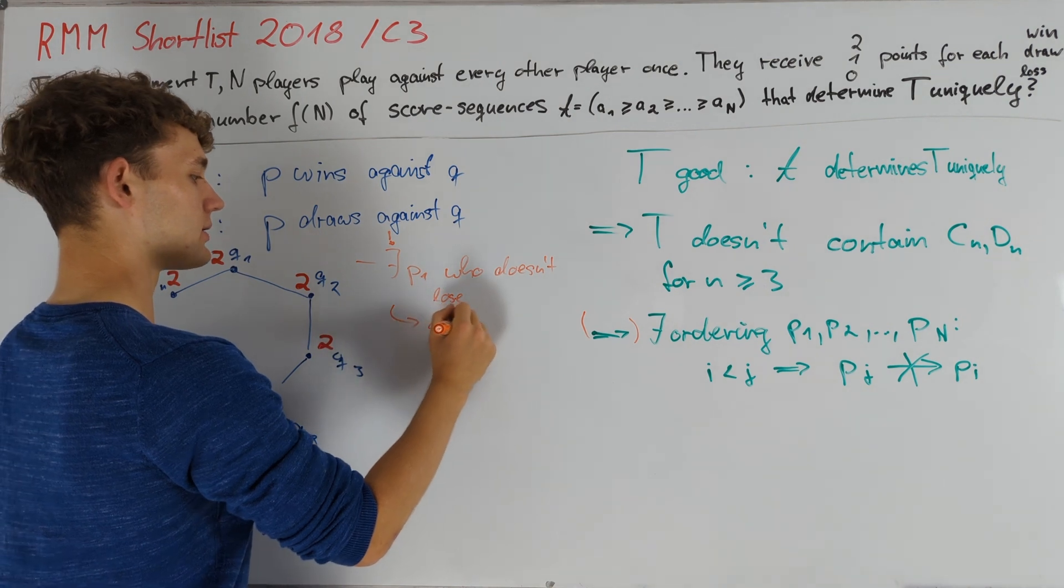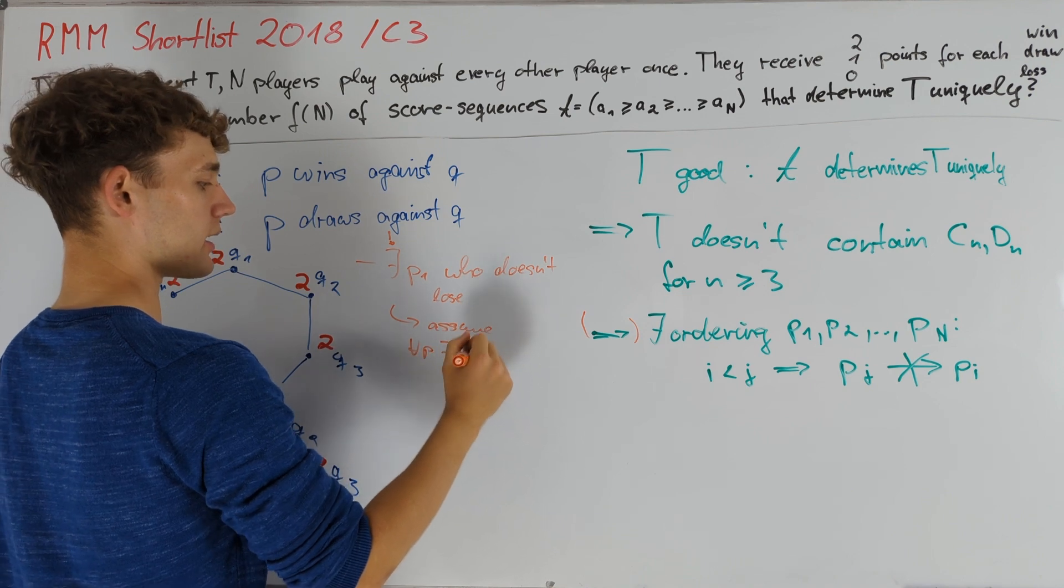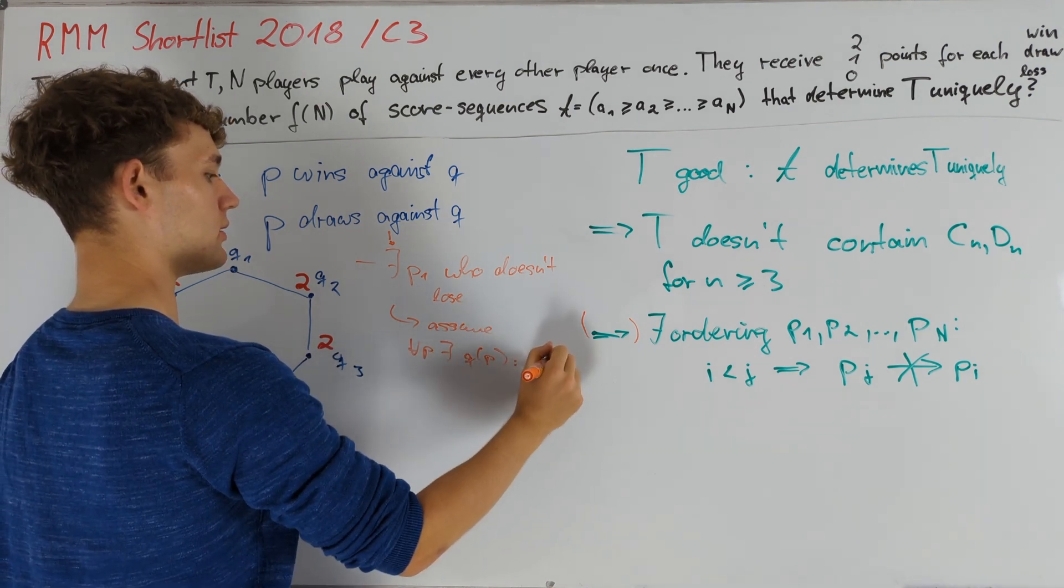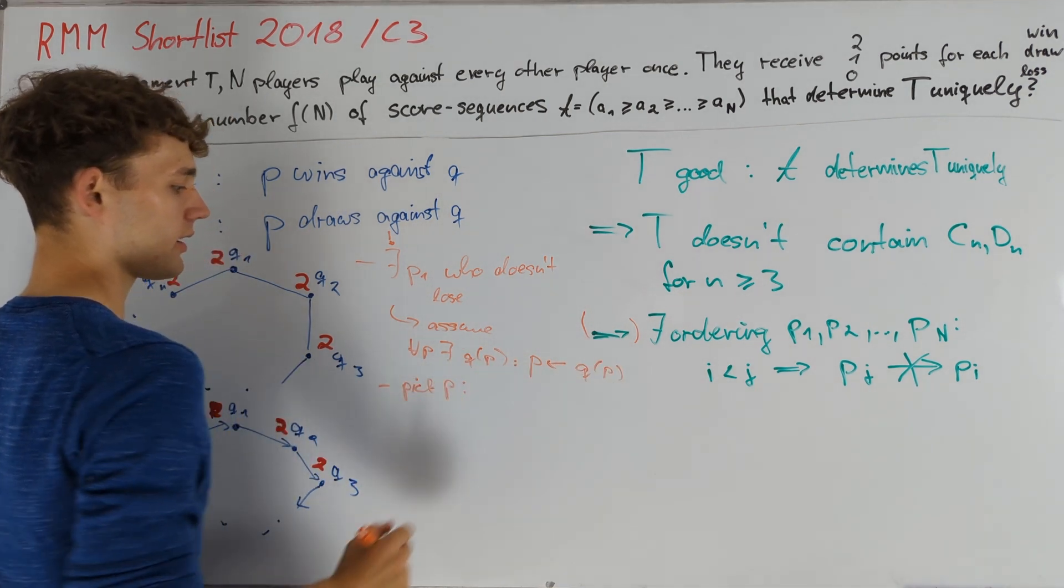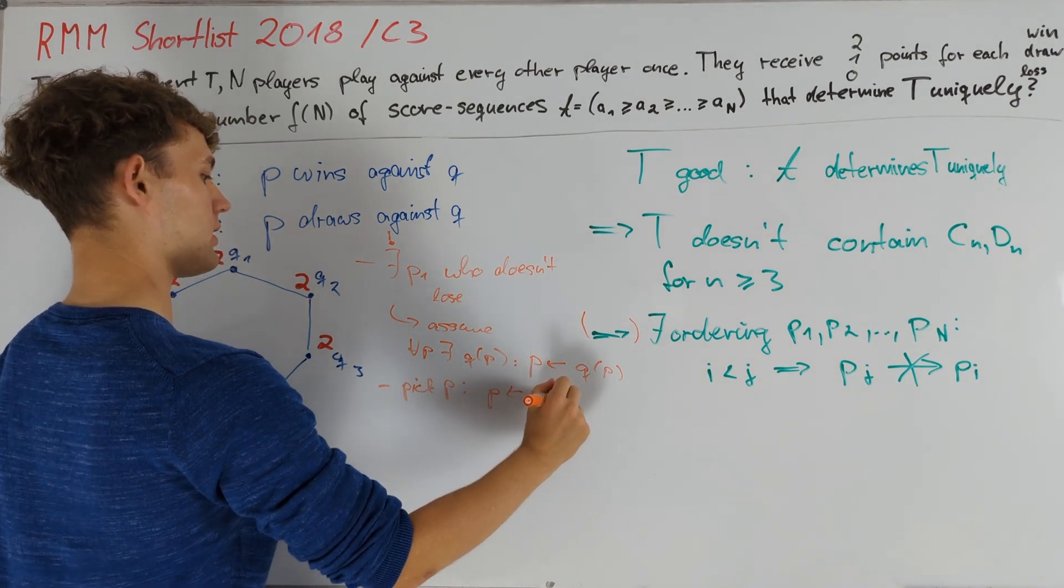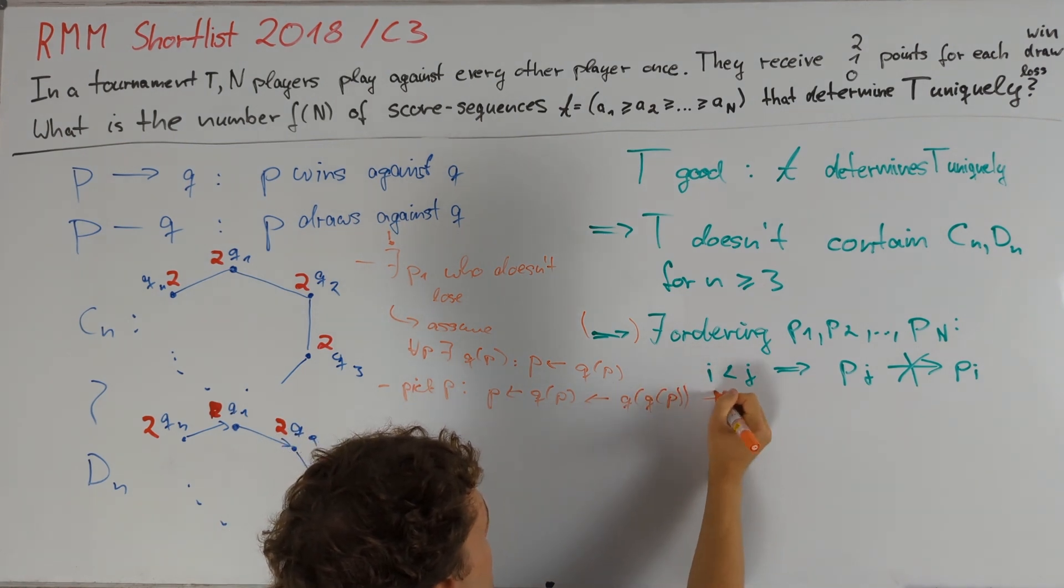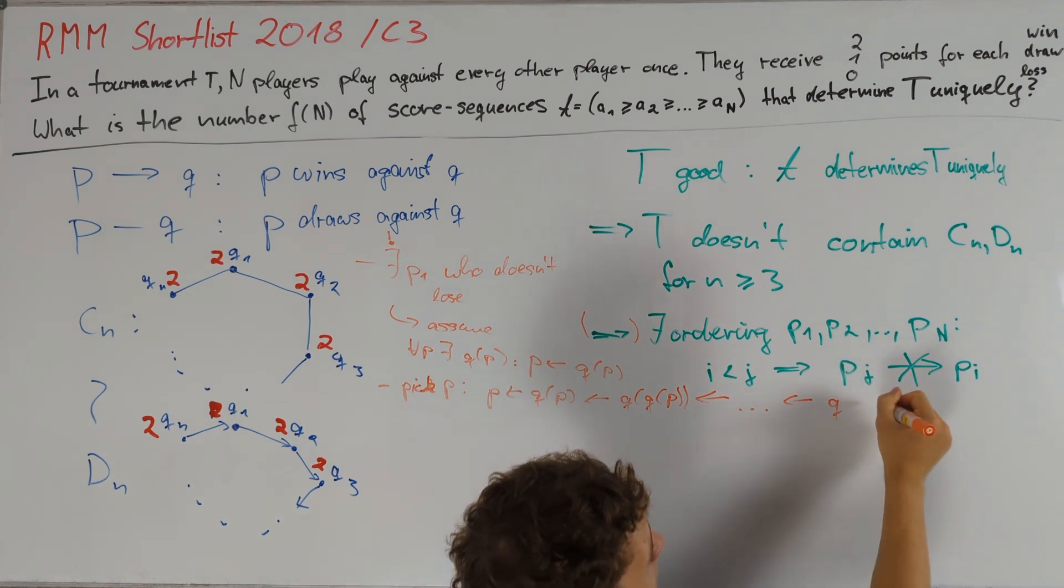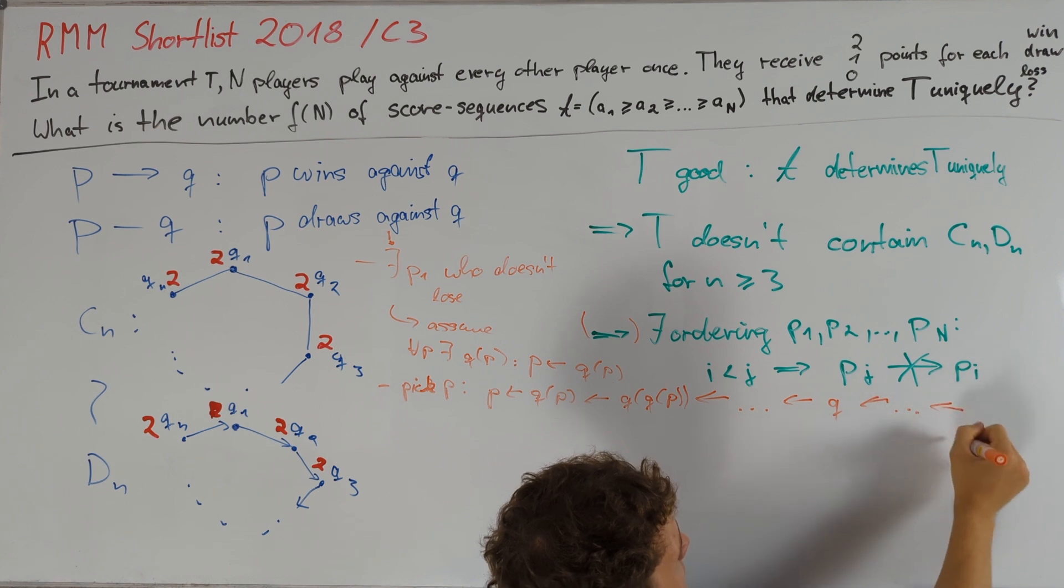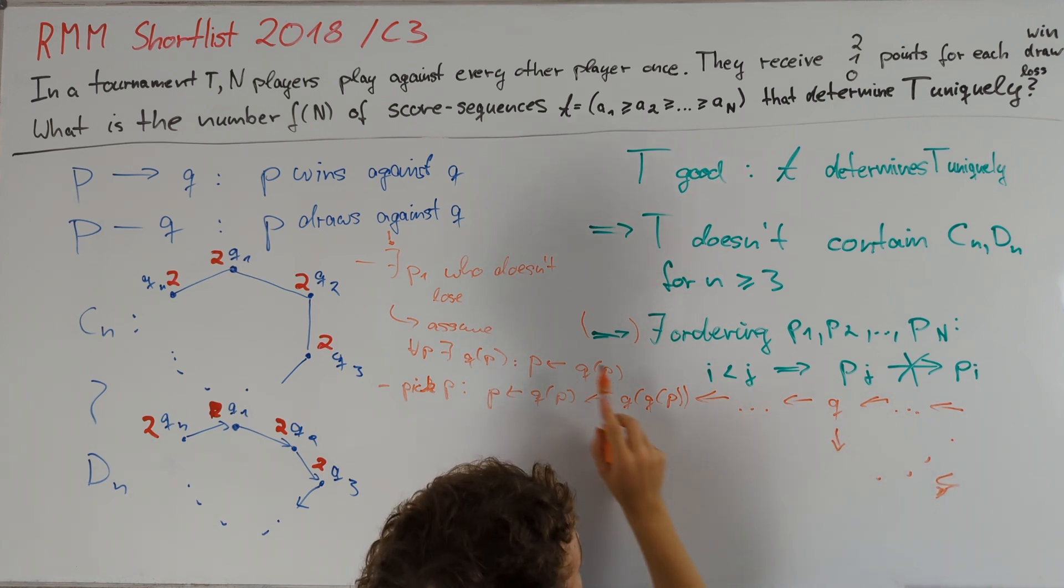So let us assume otherwise. In other words, we assume that for any player P we can find a player Q(P) such that P loses to Q(P). Hence if we pick a player P, then we have that P loses to Q(P) loses to Q(Q(P)) and so on. Since this sequence continues infinitely long, it must at some point return to some player, and now let Q be the first player that appears twice within this sequence. This is a directed cycle of length at least 3, which contradicts our assumption, and therefore we have proven this claim.